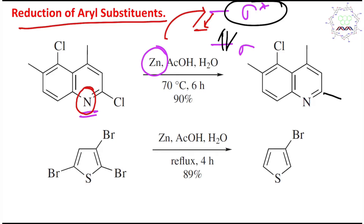Please do not confuse this reaction with nucleophilic substitution. This reaction is electron-mediated reduction — hydrogen ends up on the carbon, not any other nucleophilic group. Be careful to distinguish between electron-based reduction and aromatic nucleophilic substitution on C–Cl bonds.